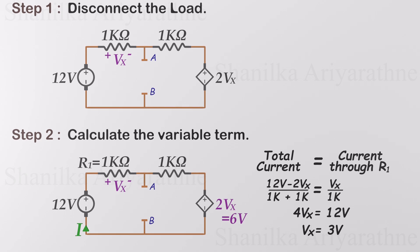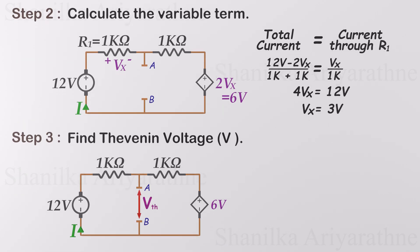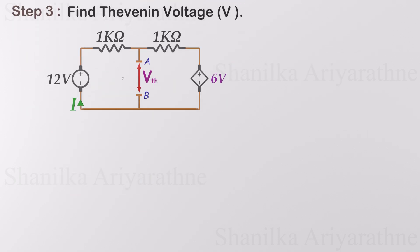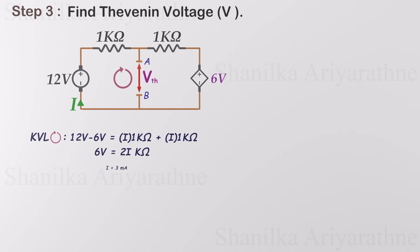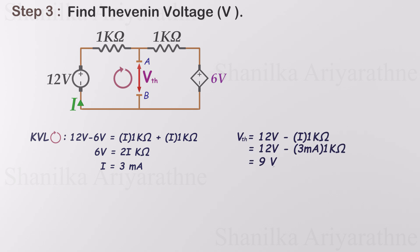Now we can find the Thevenin voltage by the usual circuit analysis methods. Applying KVL around the loop, we get the current through the loop as 3 milliamps. Using this current, we can calculate the voltage across nodes A and B, which is 9 volts. This is our Thevenin voltage.